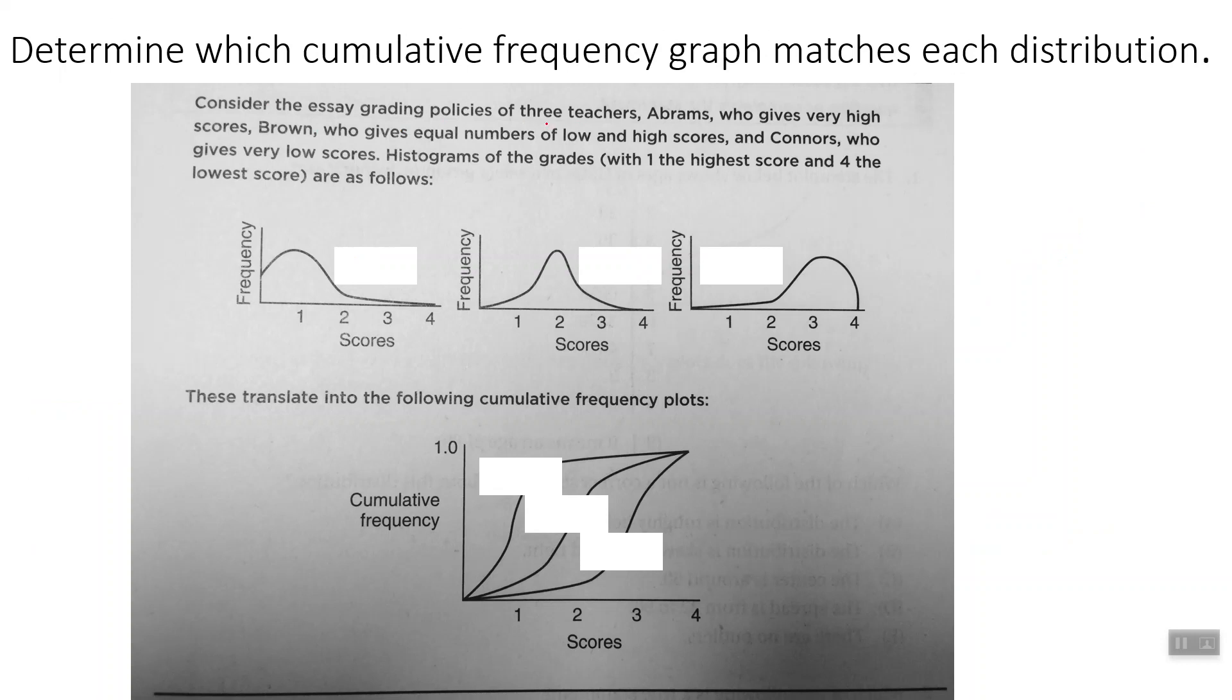So consider the essay grading policies of three teachers. Abrams, which I guess we'll just use A for them, who gives very high scores. Brown, who gives an equal number of low and high scores. And Connors, who gives very low scores. Histograms of each with one the highest score and four the lowest score are as follows. So one is high. So Abrams gets the most high. So that's the most ones. Kind of seems backwards from what I would think. So we look for which one has the most ones out of these. It looks like it's this one. So this looks like our Abrams guy. Brown gives an equal number of low and high. So we're looking for symmetric. It looks like the second one is symmetric. So it looks like that's brown. And Connors, who gives very low scores. And I don't know why, but four is considered the lowest score here. So it looks like we have Connors right there giving these low scores and keeping lots of threes and fours. That would be low scores.